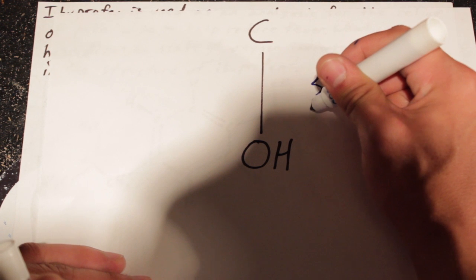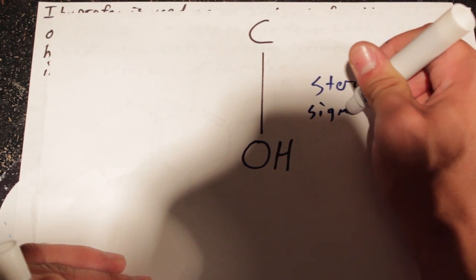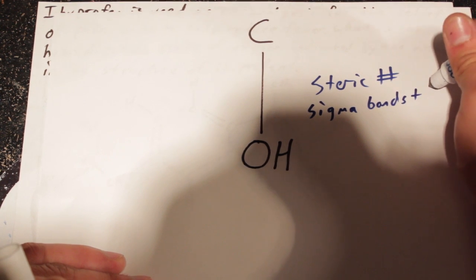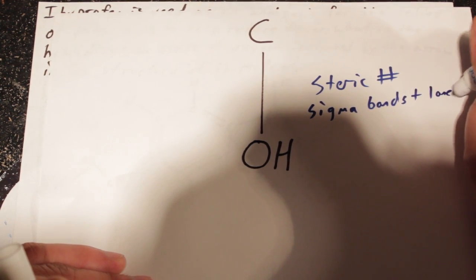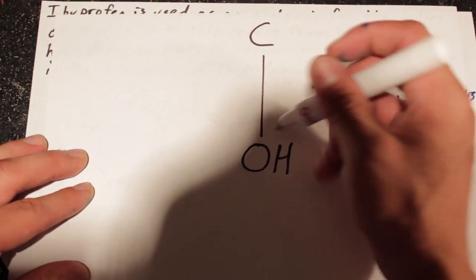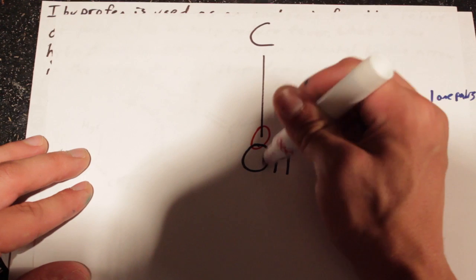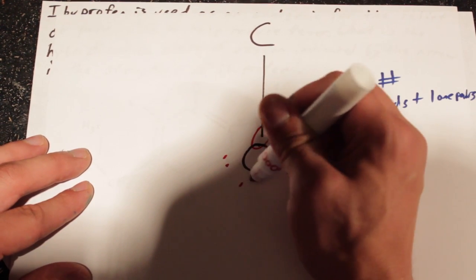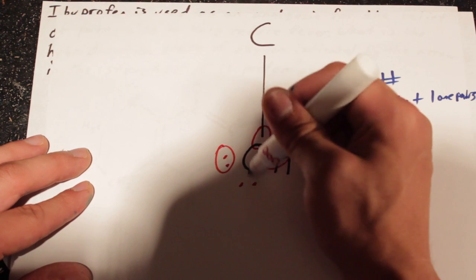That is the number of sigma bonds plus the number of lone pairs. And if we look at this, we see there's one, two sigma bonds, and on oxygen there's two lone pairs.